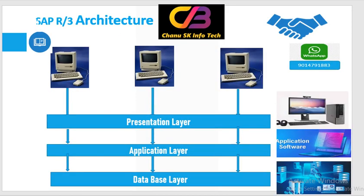Here you can see the SAP R/3 architecture diagram. As I already mentioned, there are three kinds of servers in the SAP system: the first is the presentation layer, the second is the application layer, and the third is the database layer. Every layer has a different significance in the SAP system.